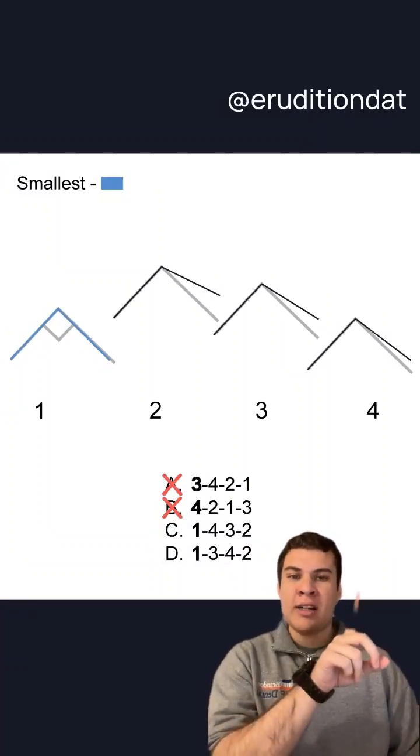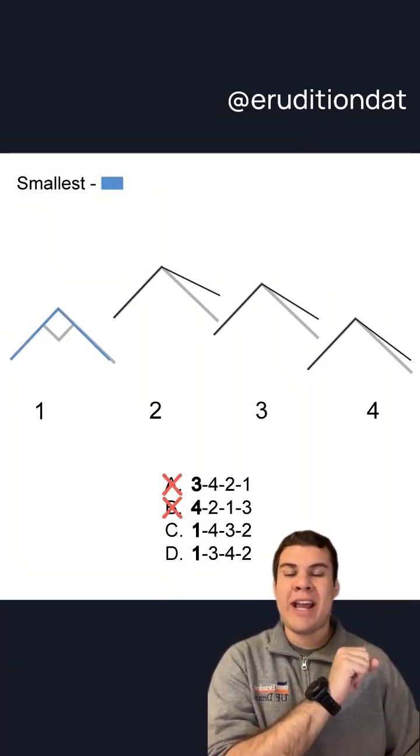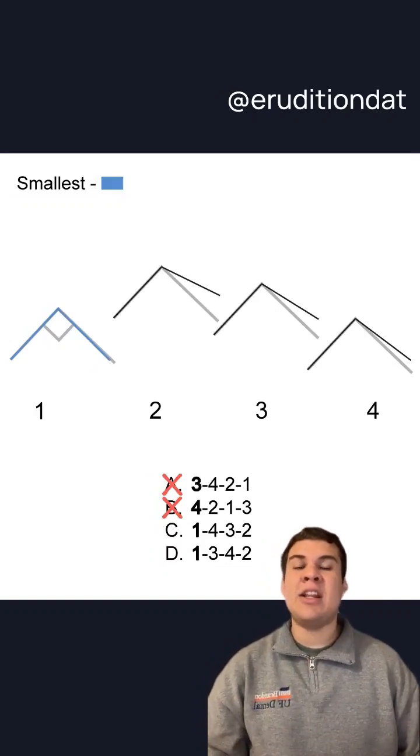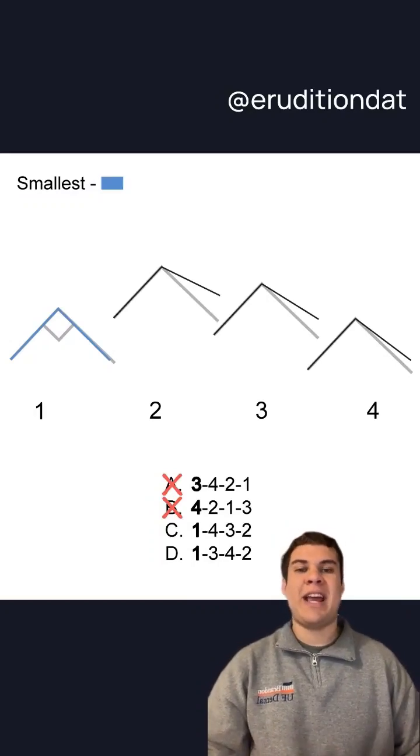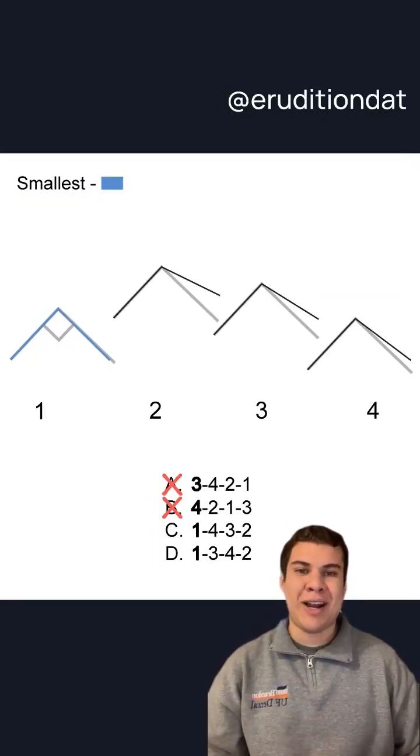you're going to see that four seems to be closer to a right angle, which is that lighter gray line that you see, whereas three is larger than four in comparison to that right angle. So this is going to leave us with answer choice C as the correct one.